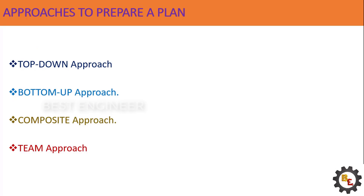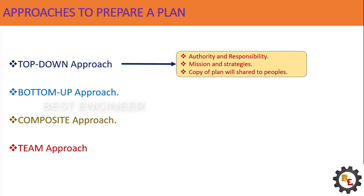Now let us see in detail. First, the top-down approach. Authority and responsibility is centralized at the top-level management. Top management defines the mission and strategies to do the plan's action to achieve the goals.